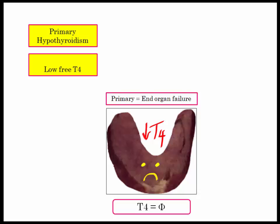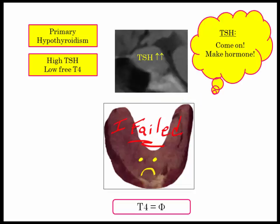Primary again refers to end organ failure. It is characterized by a low free T4. The pituitary will respond to the low level of hormone by increasing TSH production — it is trying to stimulate a failed end organ to produce more hormone. Low T4 and high TSH is the characteristic pattern of primary hypothyroidism.